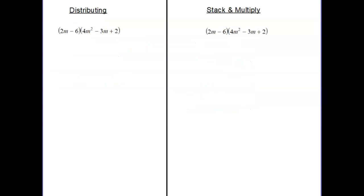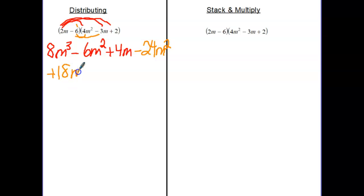This is where it starts to get uglier. So 2m there gives me 8m³. 2m goes here gives me negative 6m². 2m to that gives me 4m. Negative 6, 4m², negative 24m². Negative 6 and that gives me positive 18m. See what I'm saying about space being an issue. And negative 6 and that gives me negative 12.